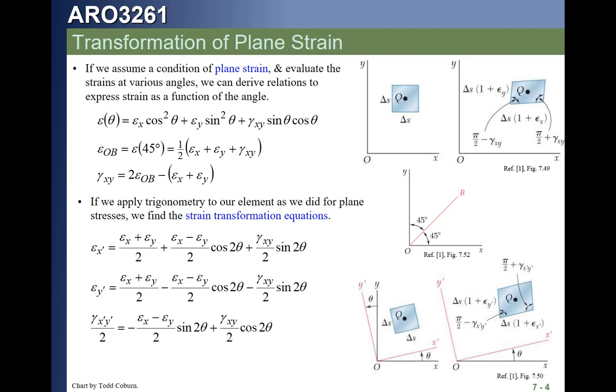And studying that trigonometry a little further, we can say, well, given a strain in the x, a strain in the y, and a shear strain on any element with any axis, we can calculate the corresponding normal strains and shear strain which are shown with prime values here, by simply plugging the strains in the x, y, and the shear strain into these three relations near the bottom.